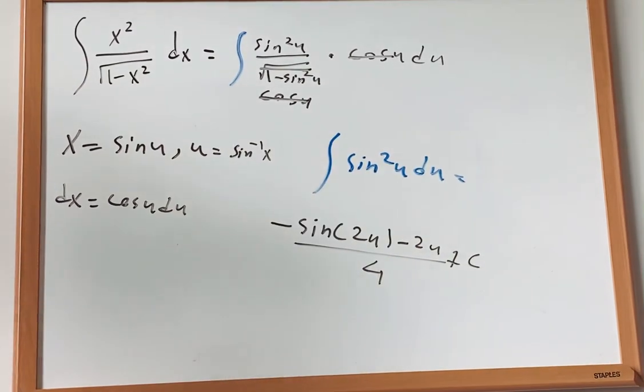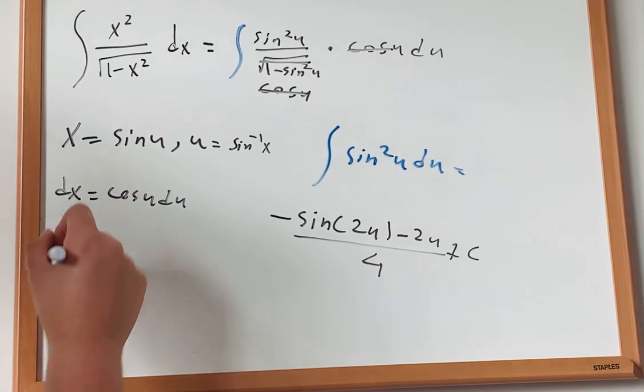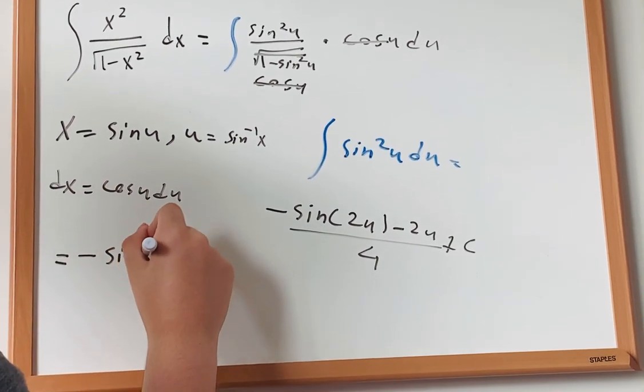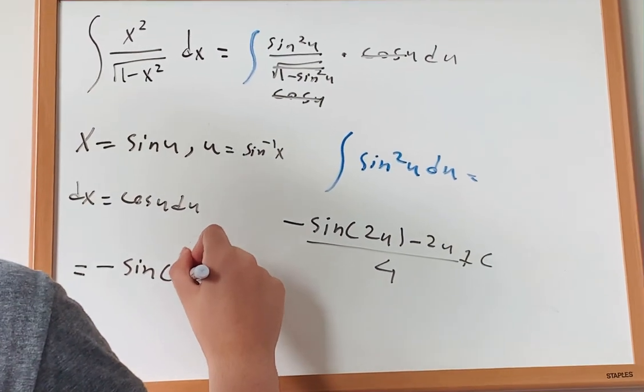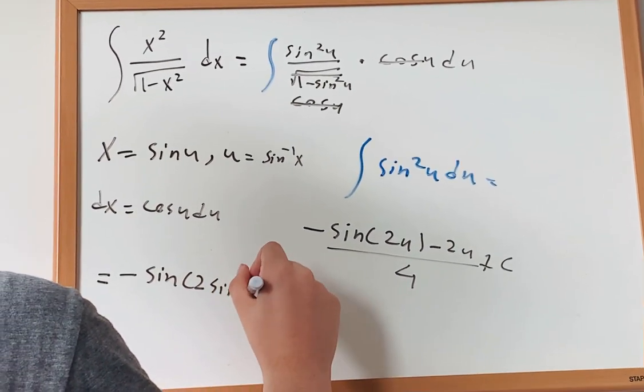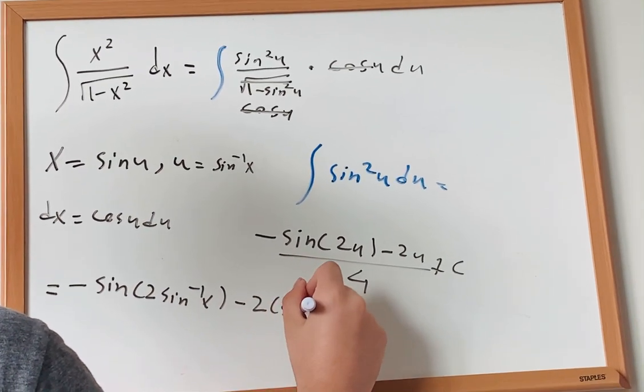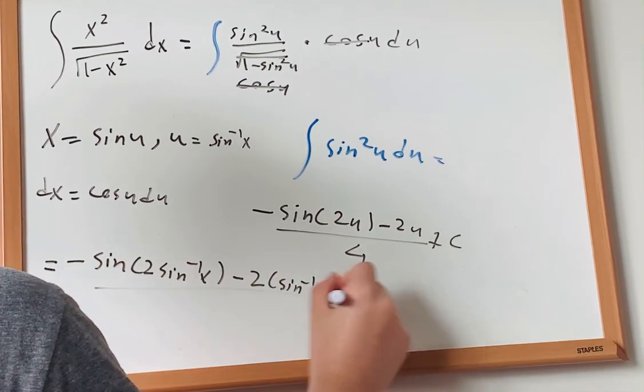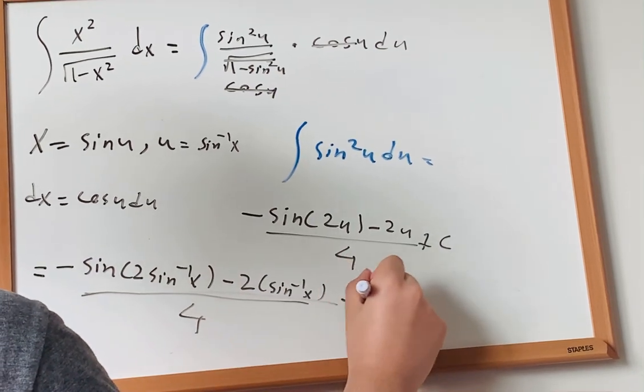But we let u to be equal to inverse sine of x, because our answer should be based on x. So the final answer is just negative sine of 2 times inverse sine of x, and then u plus c.